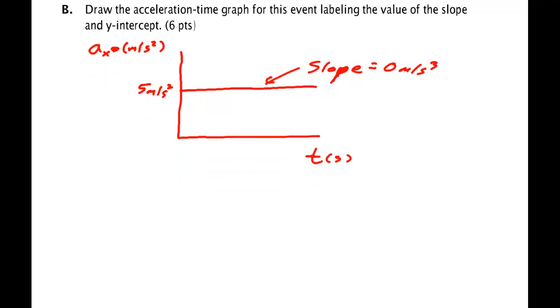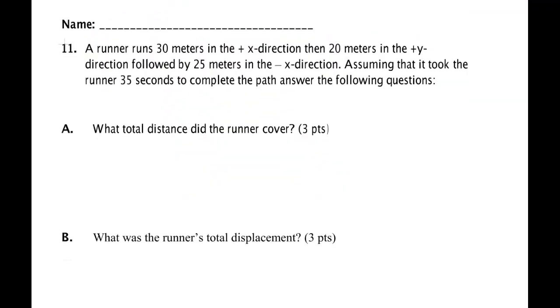Number 11. In problem number 11, we have a runner who runs 30 meters in the X direction, then 20 meters in the Y direction, followed by 25 meters in the minus X direction.